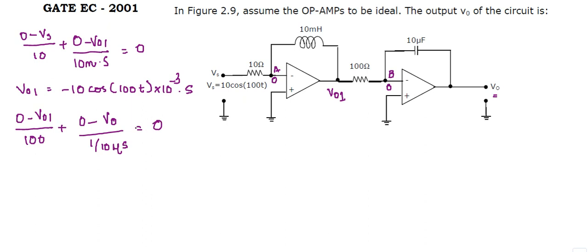So on solving we get that V0,1 minus of 100 is equal to 10 into 10 to the power minus 6 multiplied by S into V0. Now we know that V0,1 we have already calculated, so putting that value here, a negative sign here also, hence it will become positive 10 cos of 1000t multiplied by 10 to the power minus 3 into S divided by 100.